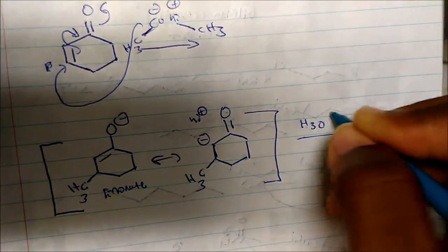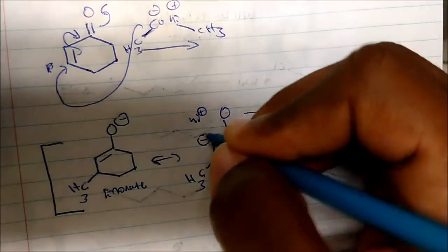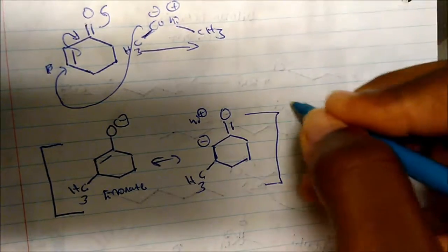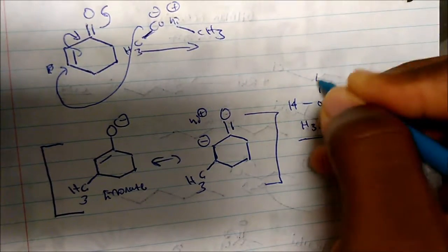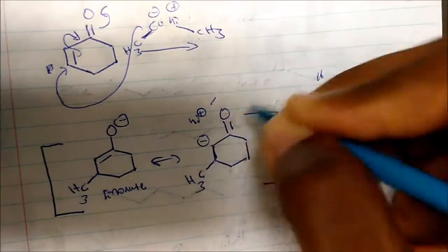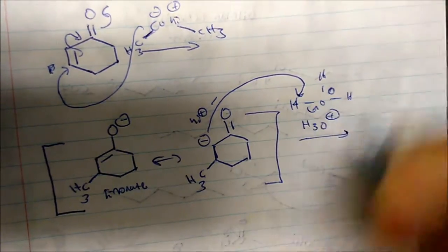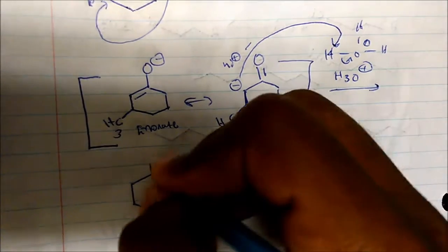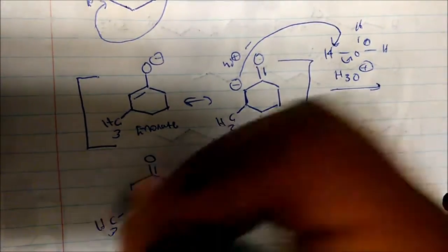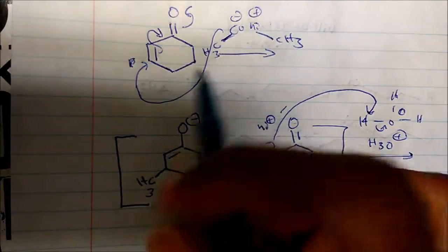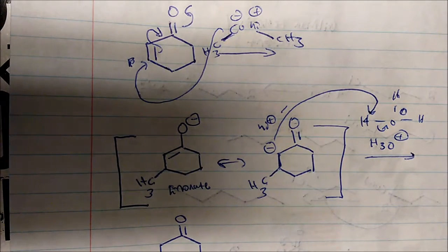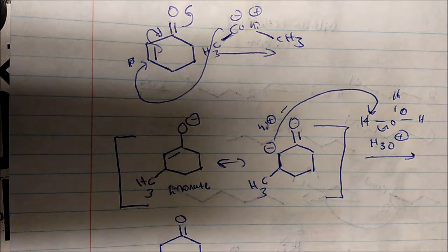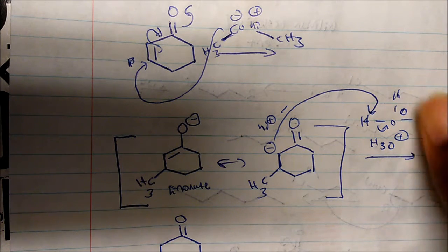We treat with acid — H3O+ — and the basic oxygen grabs a proton. We reform water in solution and get our final product. So with an alpha-beta unsaturated ketone, the Gilman reaction works well via conjugate addition, meaning we need the alpha-beta unsaturated ketone double bond system, and we get our final product.